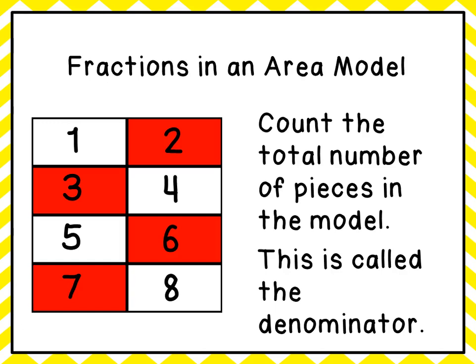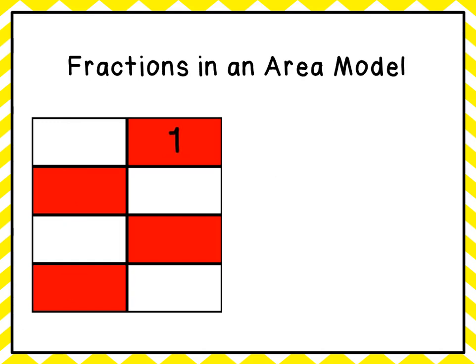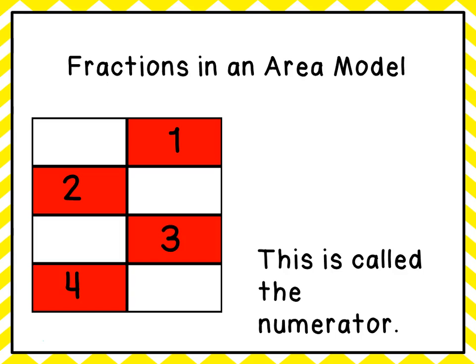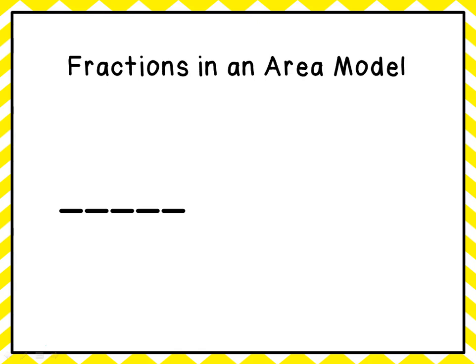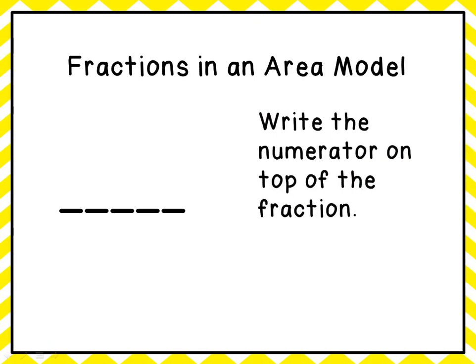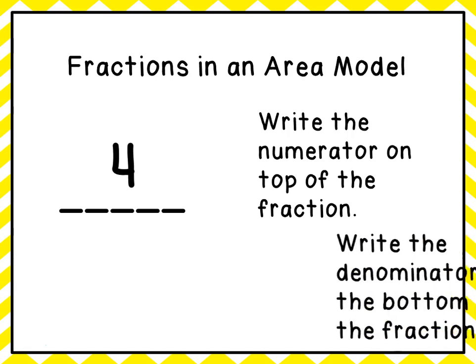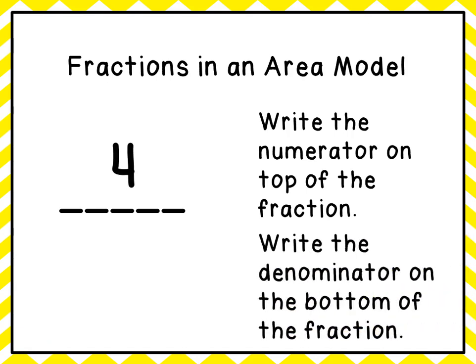And then we're going to count the number of pieces that are red. We have four of them: one, two, three, four. And again, this is called the numerator. So we're going to write our fraction. The first thing we write is the numerator at the top — how many pieces were shaded — in this case it was four. And then we write the denominator on the bottom — how many pieces we had all together — in this case it was eight. So our fraction here is four eighths.